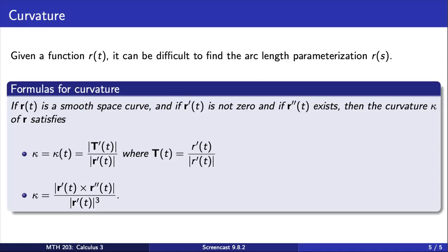If r is a smooth space curve, r prime is not zero, and the second derivative of r exists, then the curvature, denoted by kappa, satisfies either of the given formulas here. We may utilize either formula, and we may find ourselves in situations where one formula is easier to apply than the other. Note here that the first formula relies on capital T, the unit tangent vector.